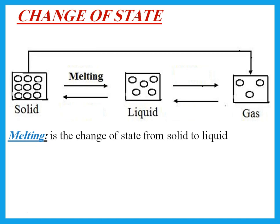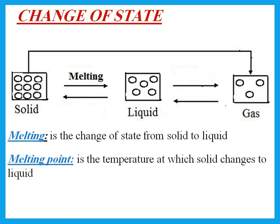When does melting happen? It happens at a certain temperature called the melting point. Please do not say it is a point — it should actually be called the melting temperature, because it is the temperature at which a solid changes to liquid. So melting is just the change, and melting point is the temperature at which this change happens.